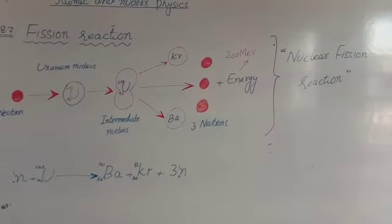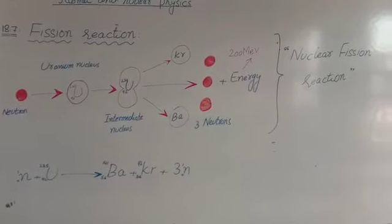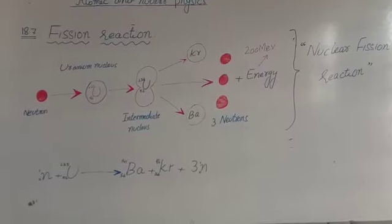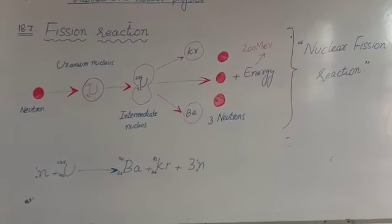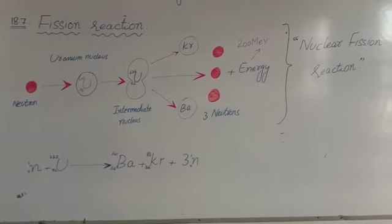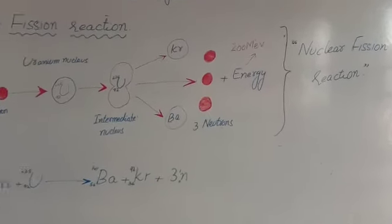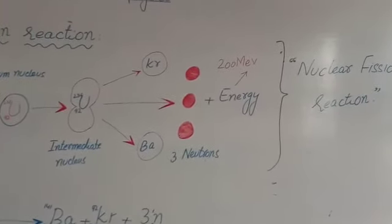Because the mass is converted into energy. Measurements show that about 200 mega-electron-volts of energy is released in each fission event.